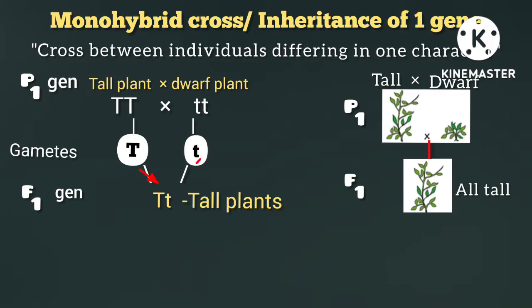These gametes fuse to form a zygote — that is seed formation. These seeds grow into next-generation plants, which represent the F1 generation, the first filial generation — the first generation of hybridized plants.